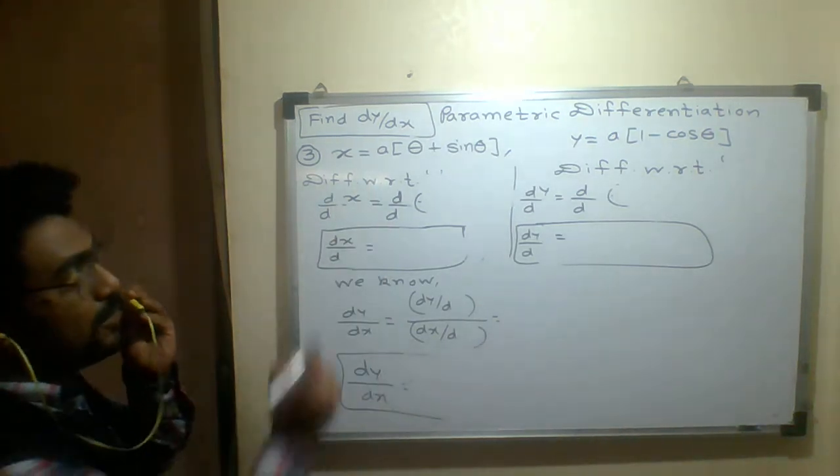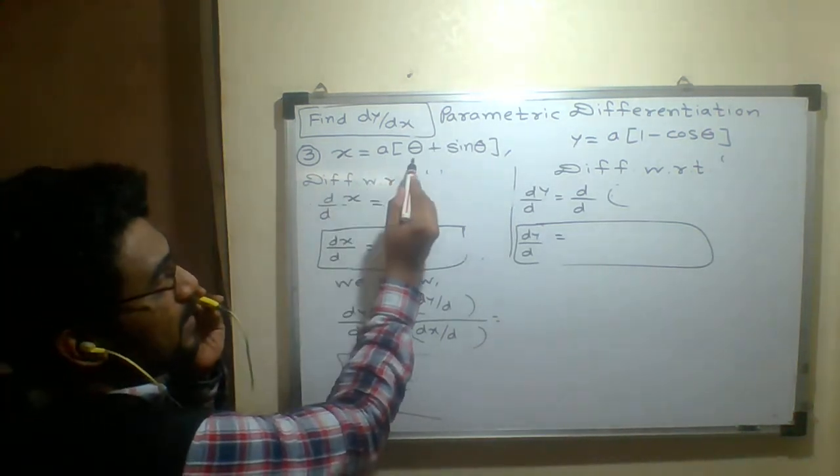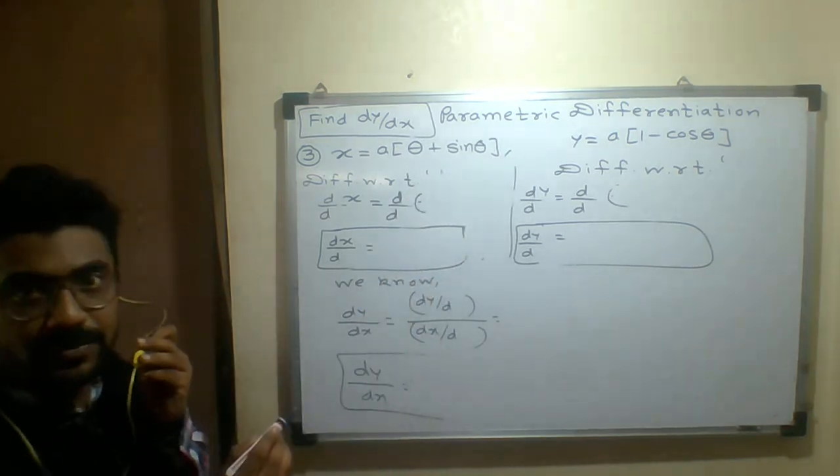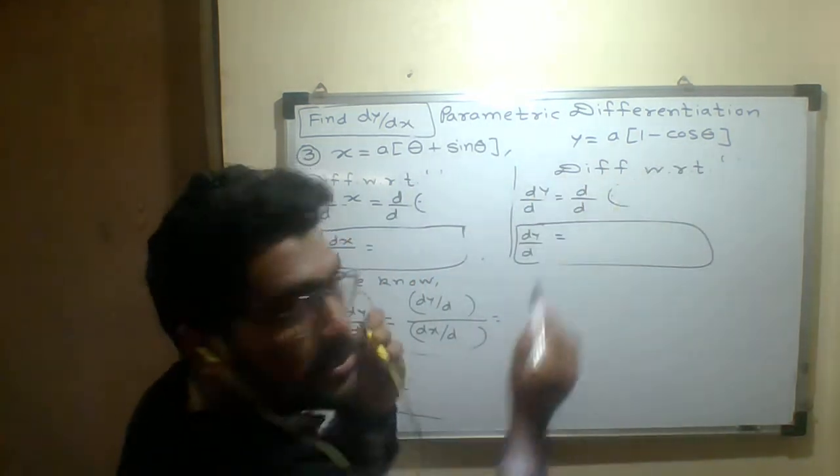So next up, problem number 3. x equals a(θ + sin θ), y equals a(1 - cos θ).